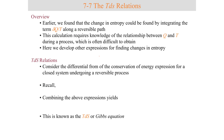Earlier we found that the change in entropy could be found by integrating the heat transfer over the temperature along a reversible path. This calculation requires the relationship between Q and T, which is often difficult to obtain. So what we are going to do is develop other expressions for finding entropy changes.